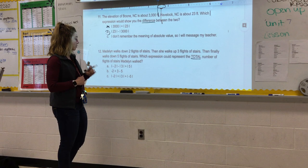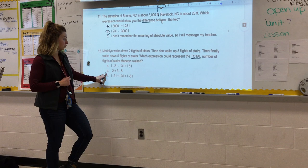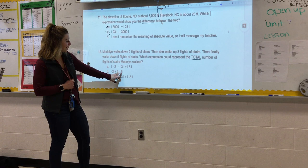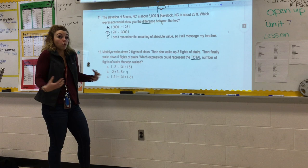I'd like to go ahead and look at B first because B doesn't have any absolute values. If we just solve B straight across, we have negative two. We're going to combine positive three with it, which will leave us at positive one. And then we have positive one minus five, which would leave us at negative four. Like I just said, she can't walk negative stairs. She did it, it happened. So B would not be our answer.